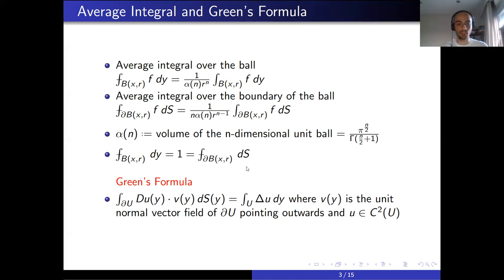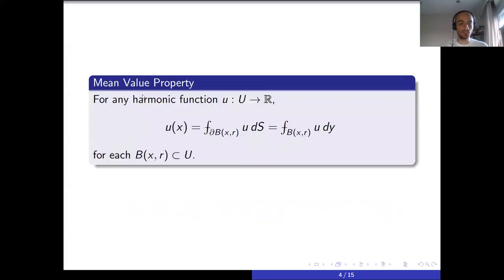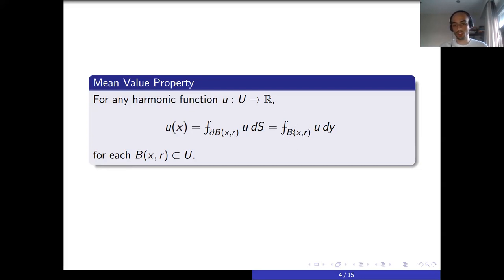Now let us introduce our mean value property. For any harmonic function and any ball contained in this capital Ω, we have this interesting equality: U(x) is equal to the average surface integral over the ball with center x and radius r, and this is also equal to the average integral over the ball.